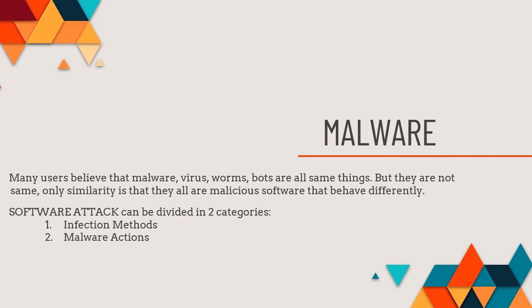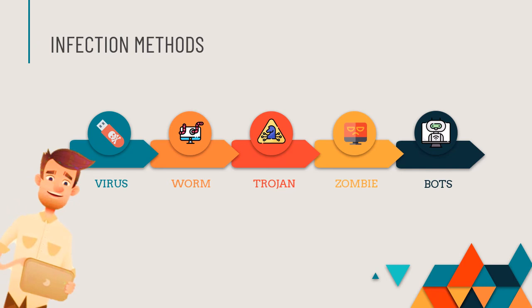These are the two types of software attacks: infection methods and malware actions. Infection methods include viruses, worms, Trojans, zombies, bots, etc. Just like a basic infection where a body is affected by an outside particle, these programs — created by different attackers — infect your computer system. They can be attached to emails, photos, or music files to get into your computer system, then wait for the attacker to give instructions or perform actions by themselves.